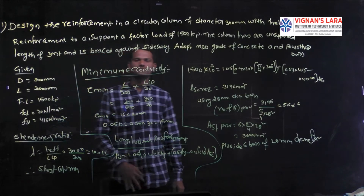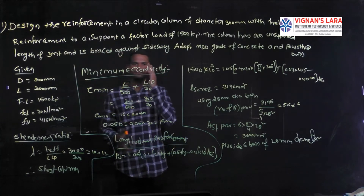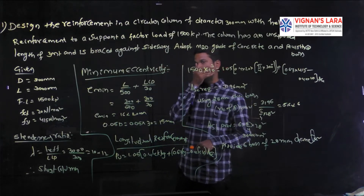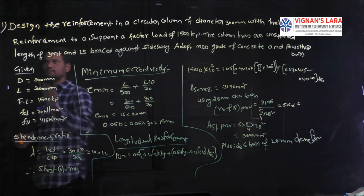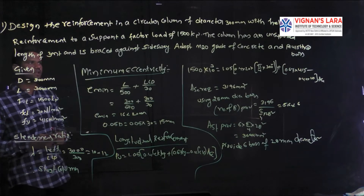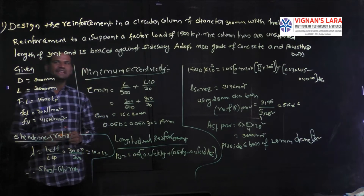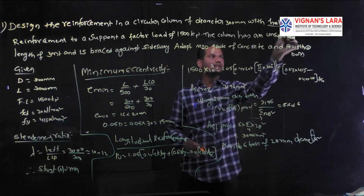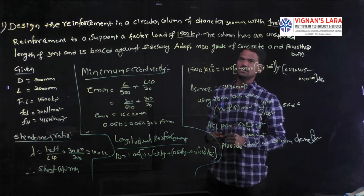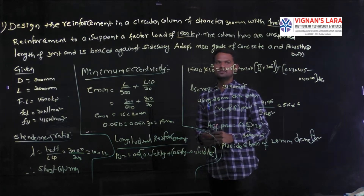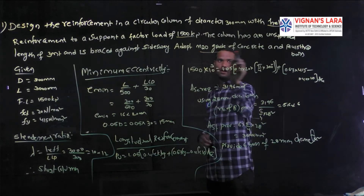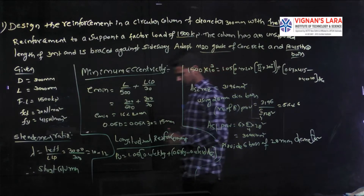Welcome to the next session for design and analysis of reinforced construction. Today we are discussing the design of a circular column with helical reinforcement. The problem: design the reinforcement in a circular column of diameter 300 mm with helical reinforcement to support a factored load of 1500 kilonewtons. The column has an unsupported length of three meters and is braced against sway. Use M20 grade concrete and Fe415 steel bars.